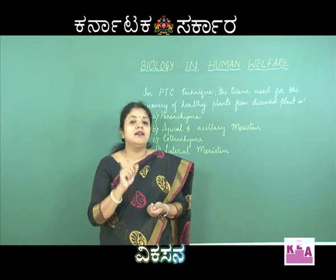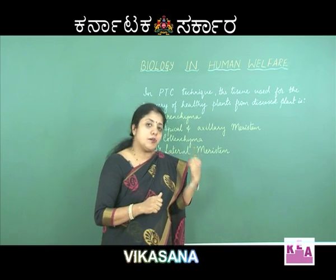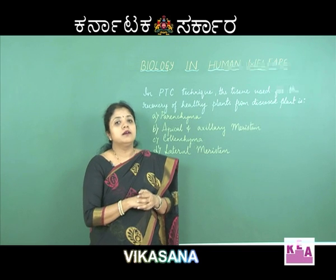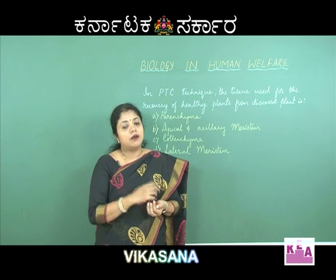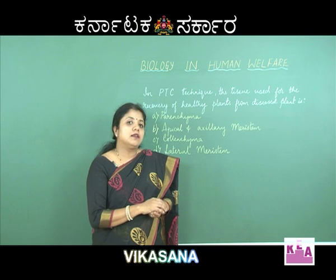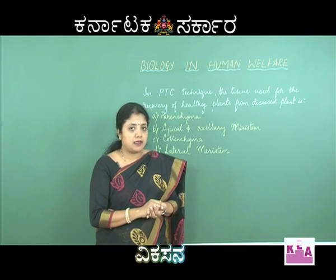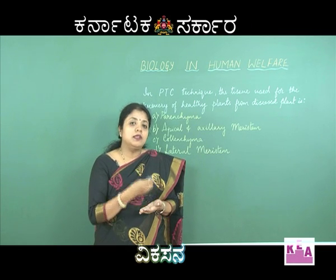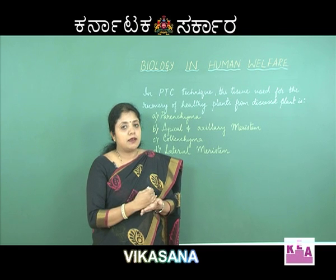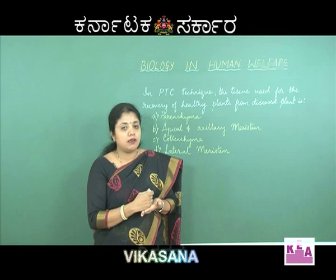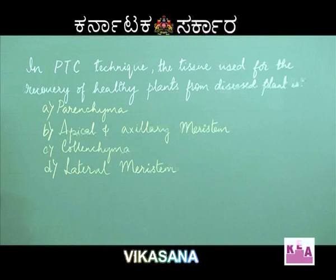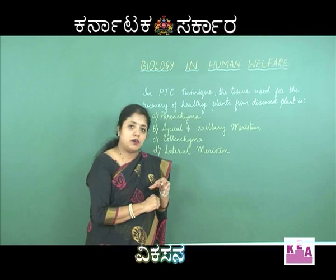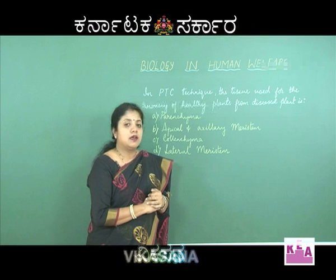Among the options, parenchyma and colenchyma are mature cells which are completely differentiated. Lateral meristem is found within the vascular bundle. Since parenchyma and colenchyma will already be infected by the pathogen, they are completely ruled out. Lateral meristem is also ruled out as it is a little difficult to obtain.